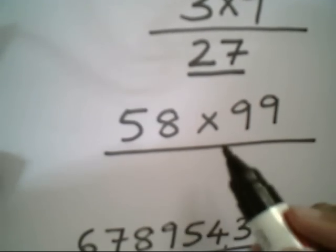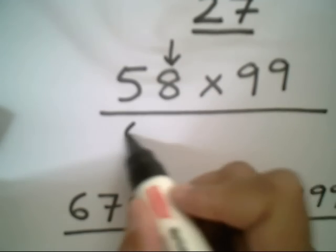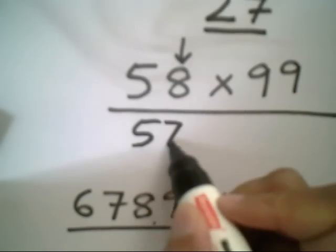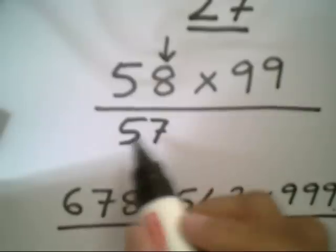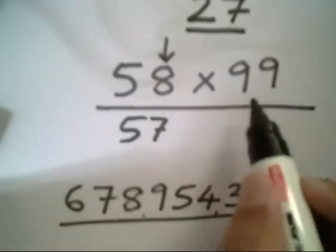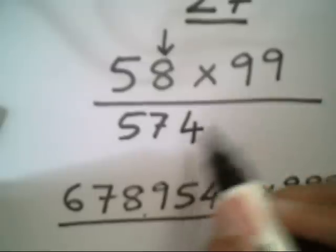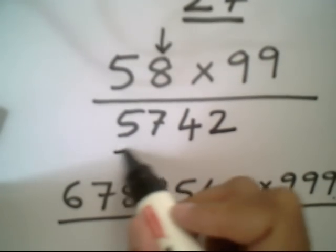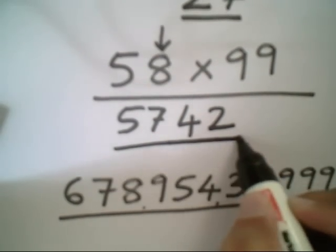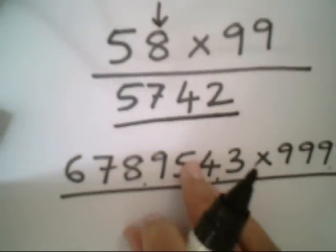Same way, when it is 58 into 99, what I do is I just make one less in 58, that is 57, and this 57 I subtract from 99. Rather, this 5 and 7 I subtract from 9. That is 9 minus 5 is 4, and 9 minus 7 is 2. That's all, I got the answer. In the same way...